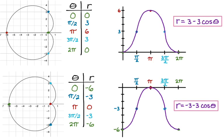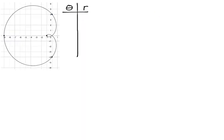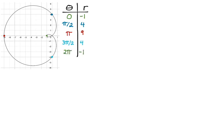Let's do one more example — a limaçon that has an inner loop. A negative cosine limaçon with an inner loop starts in the inner loop. When theta is zero, I'm facing positive x but go backwards, so r is negative one: zero, negative one. Rotating to pi over two, going out four units forward gives pi over two, four. Rotating to pi, moving forward nine units gives pi, nine. At three pi over two, facing that direction and moving toward it gives a positive radius of four. At two pi, facing positive x again but going backwards gives negative one again.